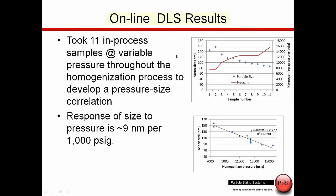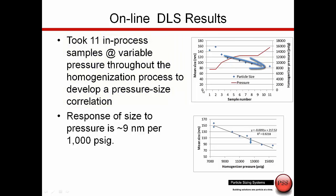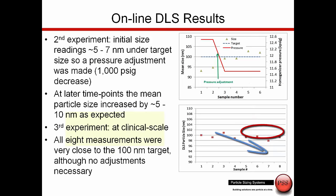Now we've decided the measurement length, and we want to understand what is the effect of homogenizer pressure — plotted on the right y-axis — on particle size, plotted on the left y-axis. The blue diamonds are the particle size and the maroon line is the pressure. As we increase and decrease the pressure we can see the change in particle size: as the maroon line increases, showing an increase in homogenizer pressure, we see a decrease in particle size. By plotting mean size versus pressure, we see a very direct correlation with an R-squared value of 0.92, meaning for every change in 1000 PSIG we have about a 9 nanometer change in particle size.